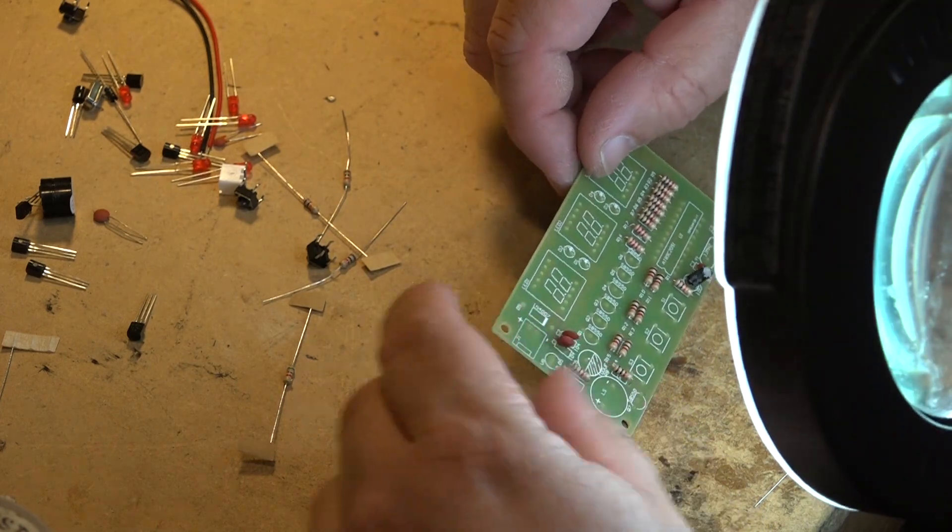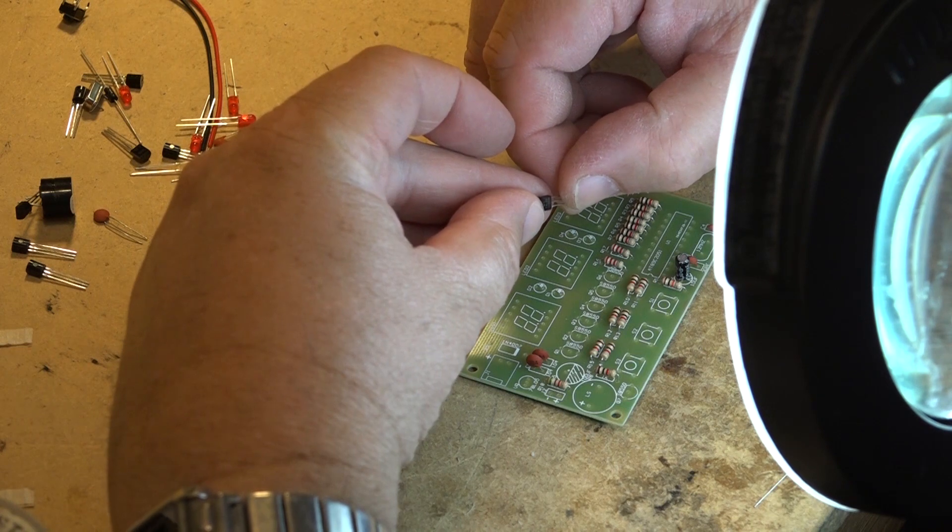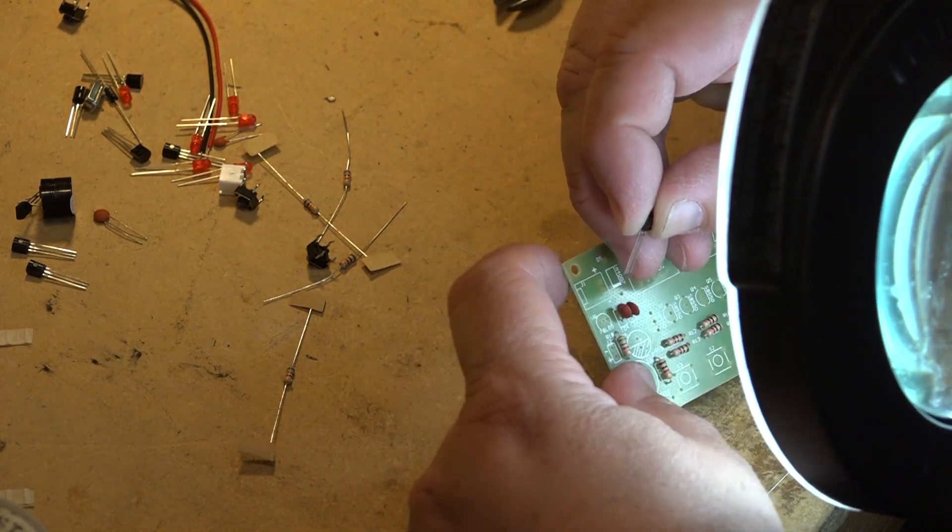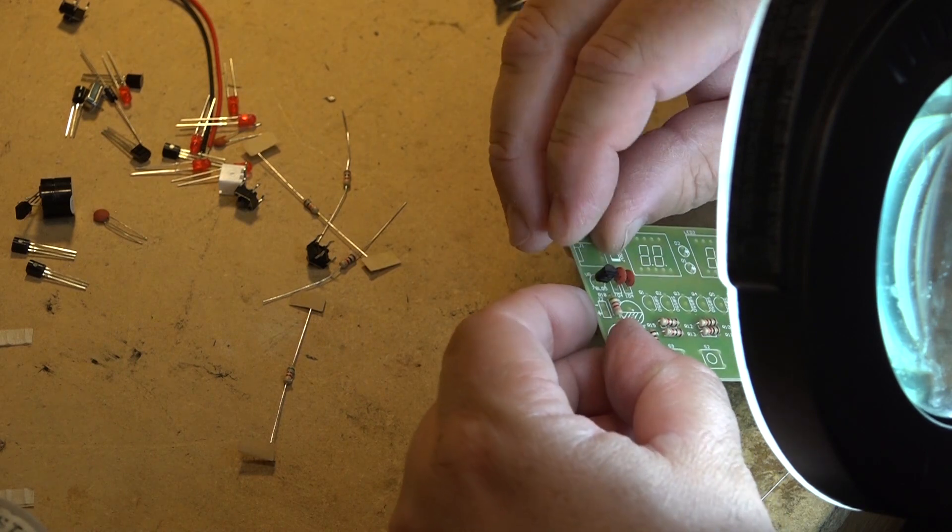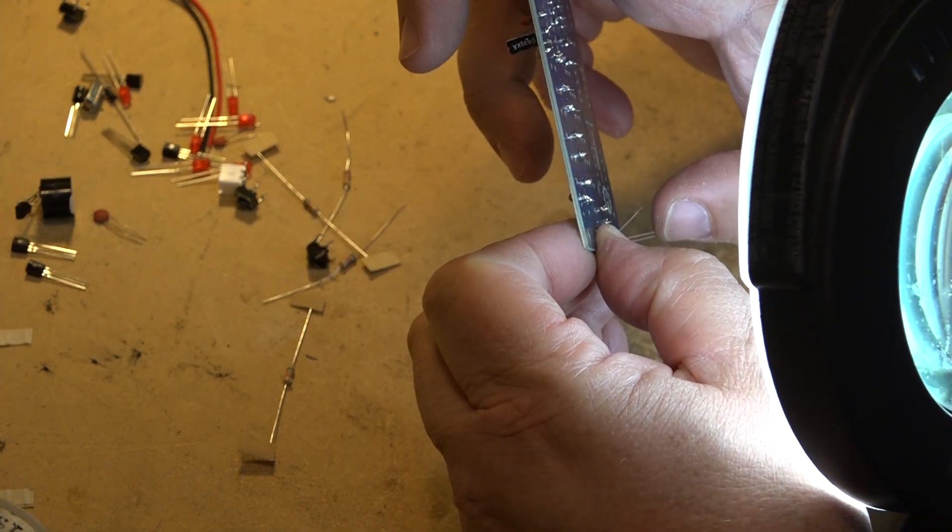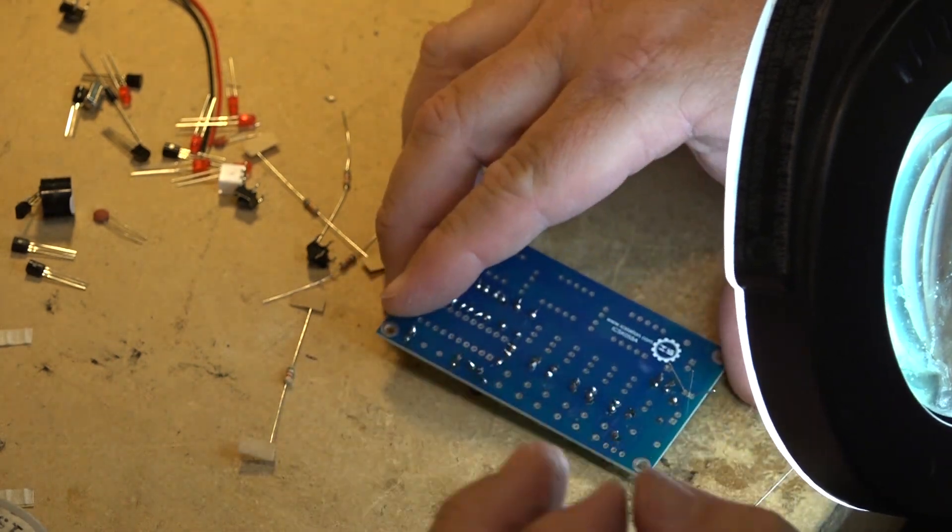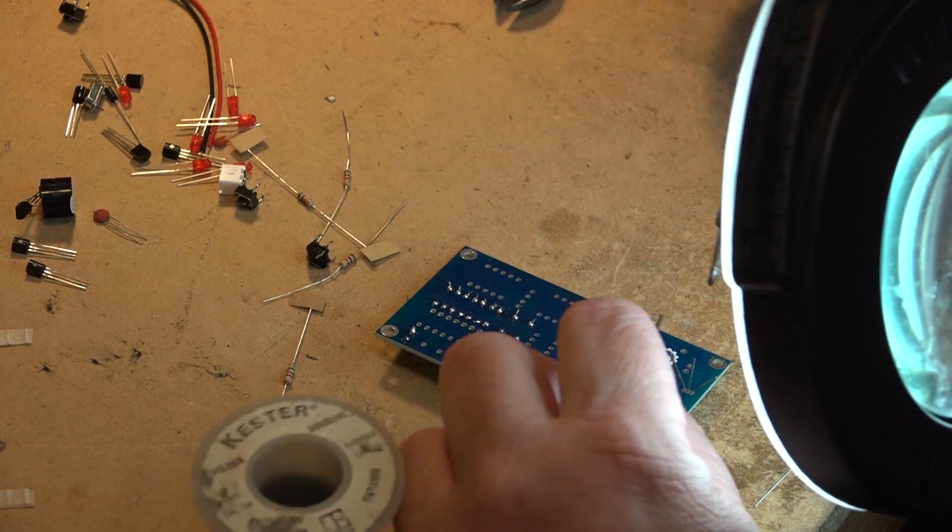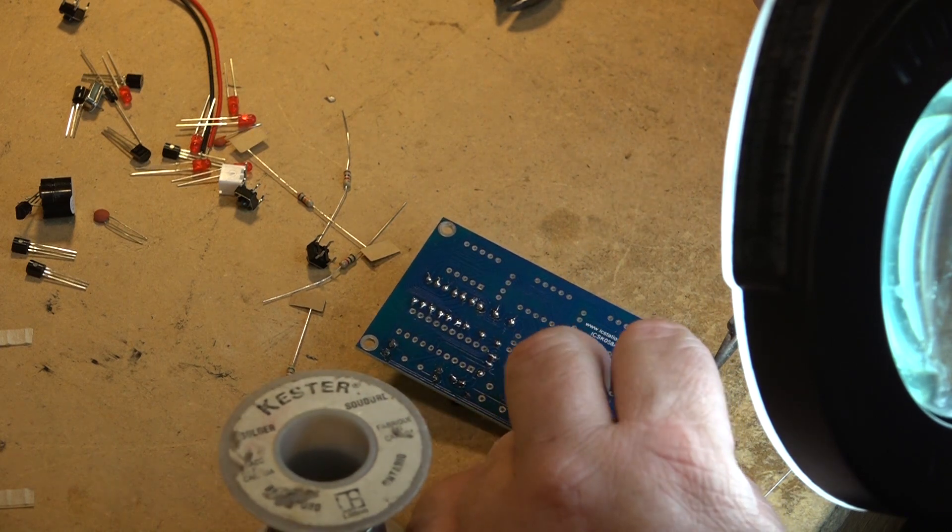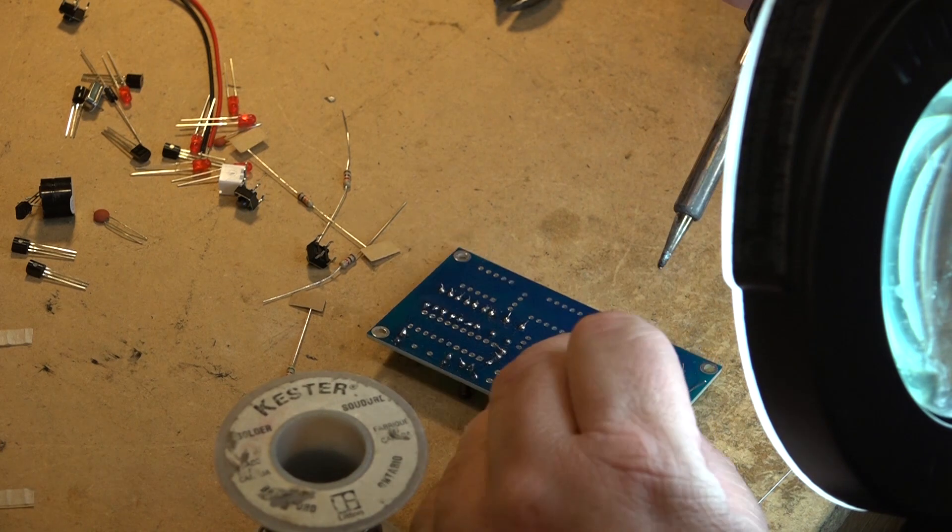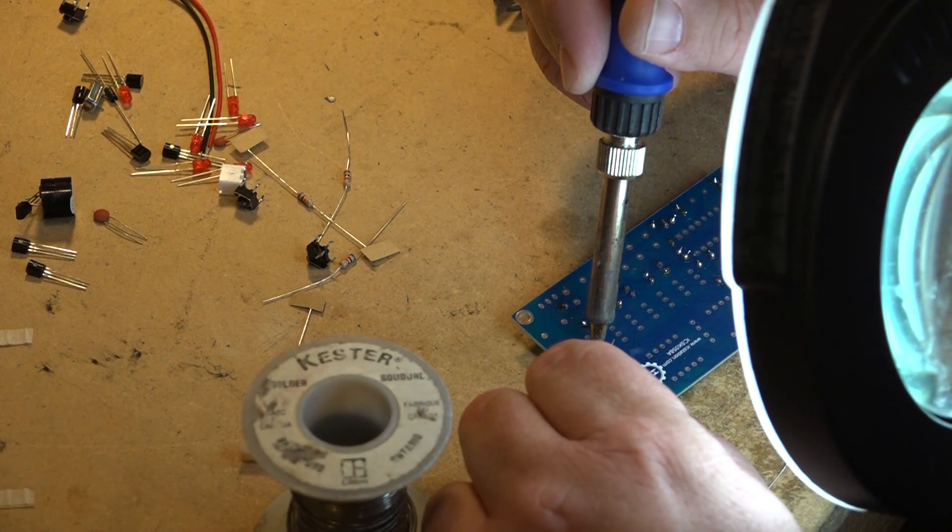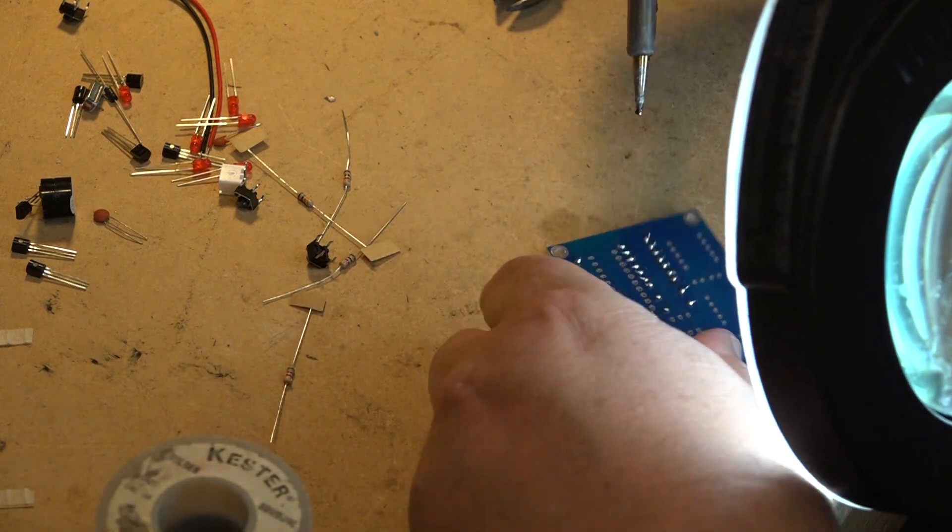Next we'll put in the 7805 or 78L05, a low power regulator. It goes in right here where it's marked. It's got a flat side on it. I like to mount my semis nice and flat to the board without a lot of leads sticking out. I used to build a lot of kits years ago. This is like the fifth clock I've built over the years.